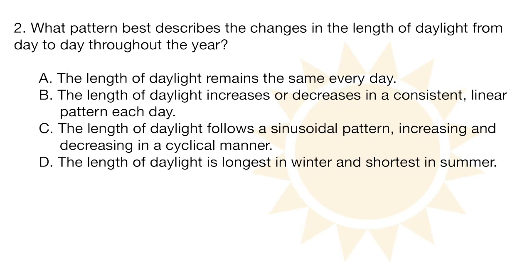Question 2. What pattern best describes the changes in the length of daylight from day to day throughout the year? Is it A, the length of daylight remains the same every day? B, the length of daylight increases or decreases in a consistent linear pattern each day? C, the length of daylight follows a sinusoidal pattern, increasing and decreasing in a cyclical manner? Or D, the length of daylight is longest in winter and shortest in summer?